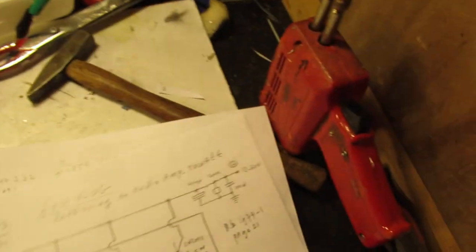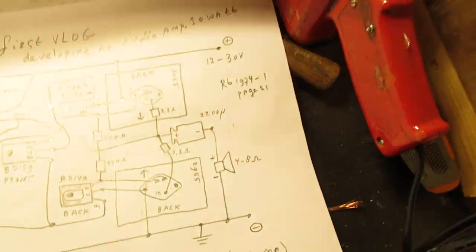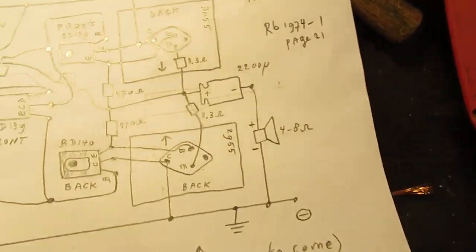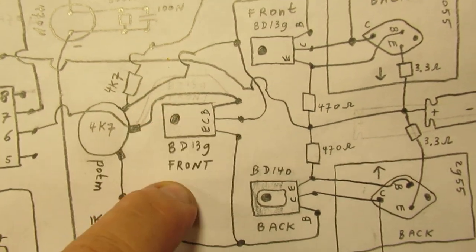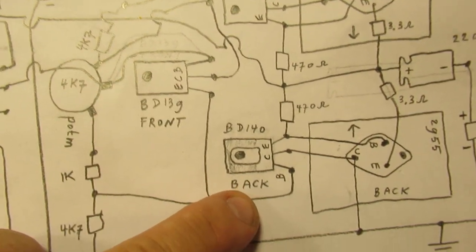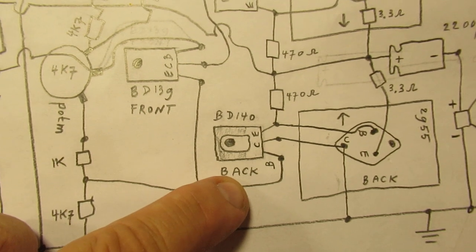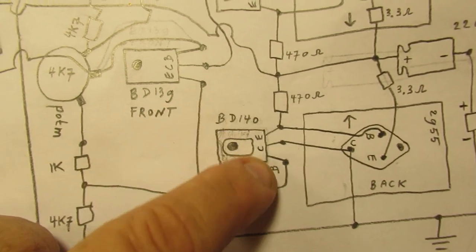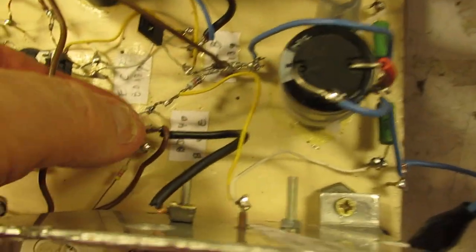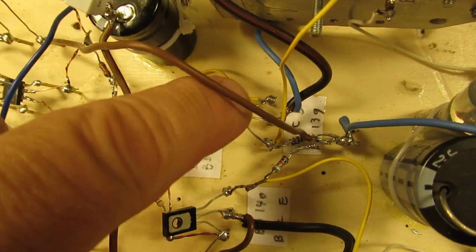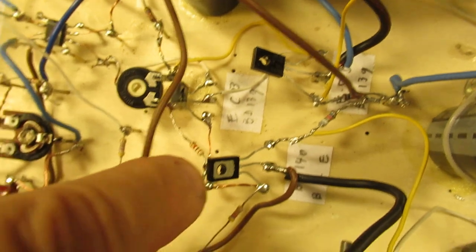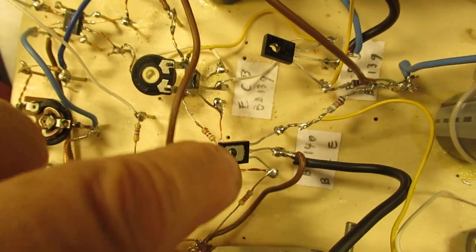And the pin connections are here. PNP power transistor. The BD140 is here that it's back, so that's here the back side. And here it's the front side that's black, and here we have a kind of cooling plate.